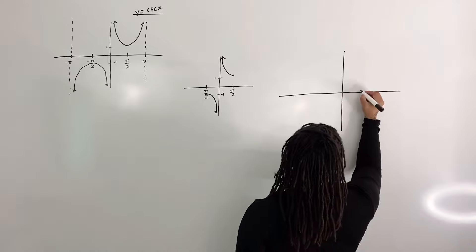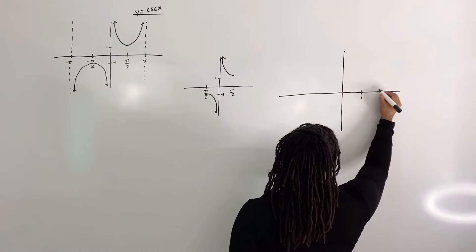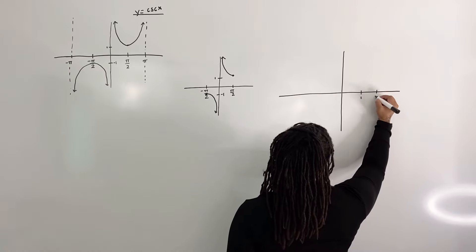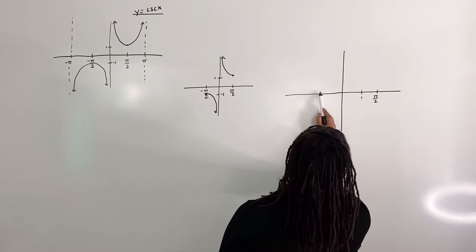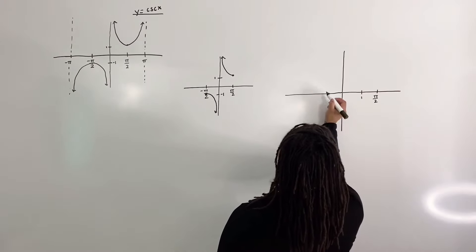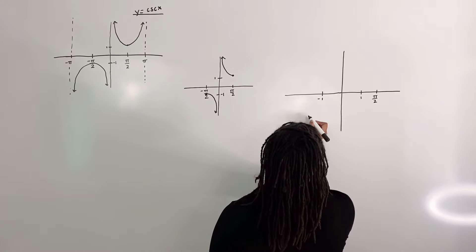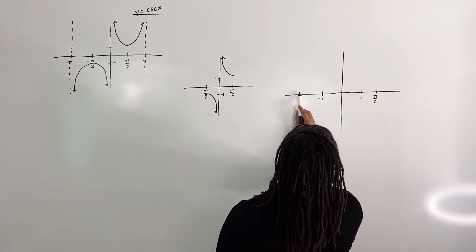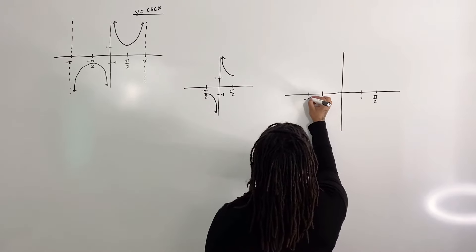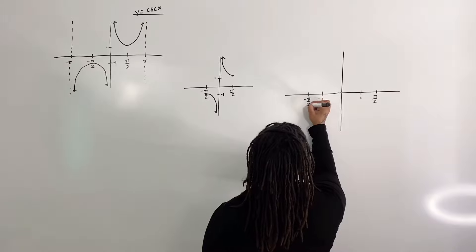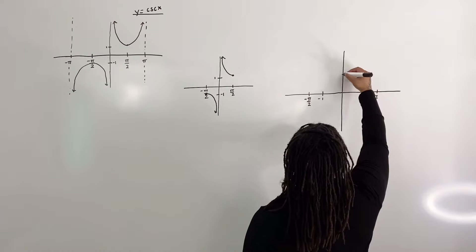So I'm going to draw a number quadrant. Here I have 1; 2 would be about right here, so pi over 2 would be about here. Here we have negative 1; negative 2 would be about here, so negative pi over 2 would be here. And let's do the same along the y-axis.